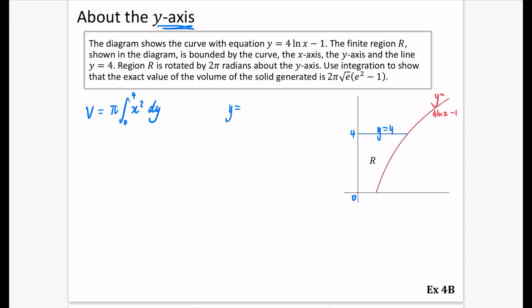As y is 4 ln x minus 1, we're going to make x the subject and then square it. So that's going to be y plus 1 divided by 4 equals ln x. And now we can use our exponentials. We know that this means that x is going to be equal to e to the power of y plus 1 over 4.